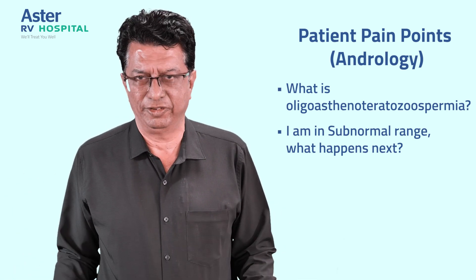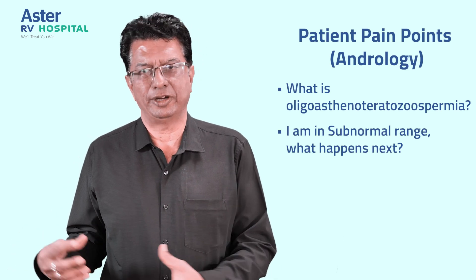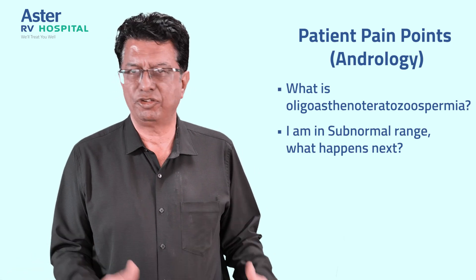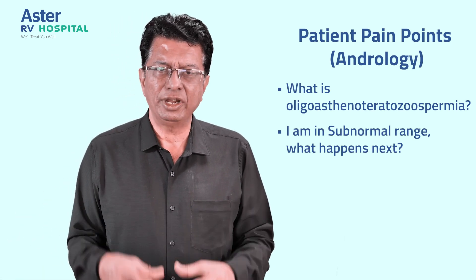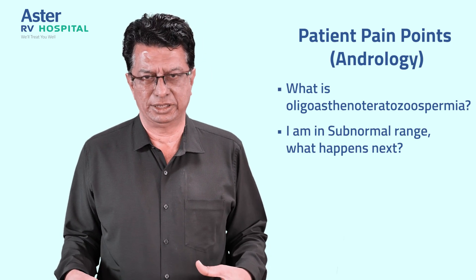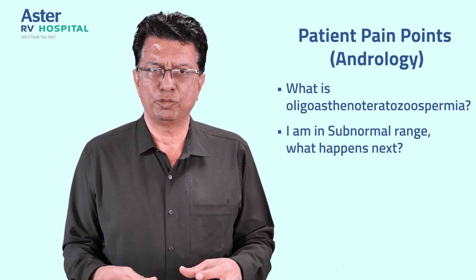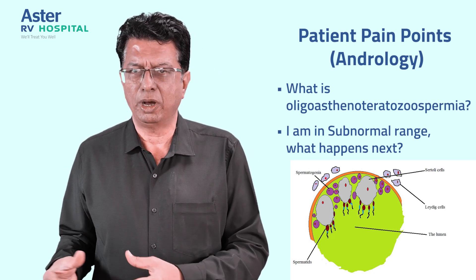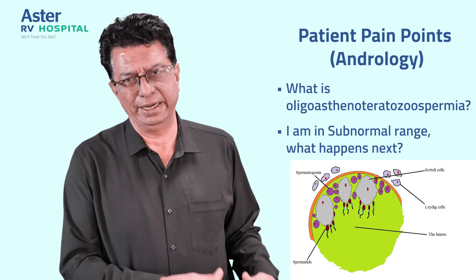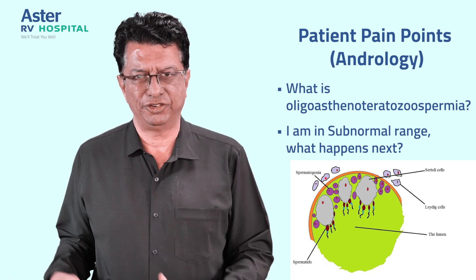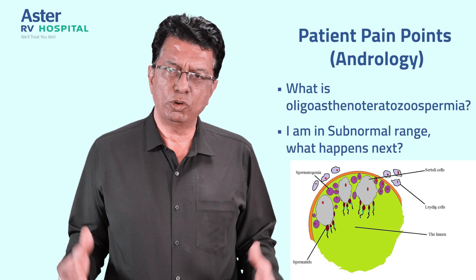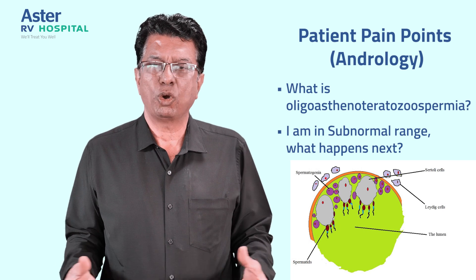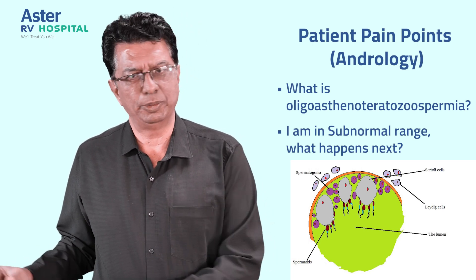Semen is produced because of hormonal influences. The brain secretes certain hormones — FSH, LH, Testosterone, and Estradiol — which have an effect on two cells inside the testis. The sperm is produced by what is called the Sertoli cell. The shape and characteristics of the sperm are modified by what is called the Leydig cell. These hormonal influences act on these cells and consequently the sperm is produced.